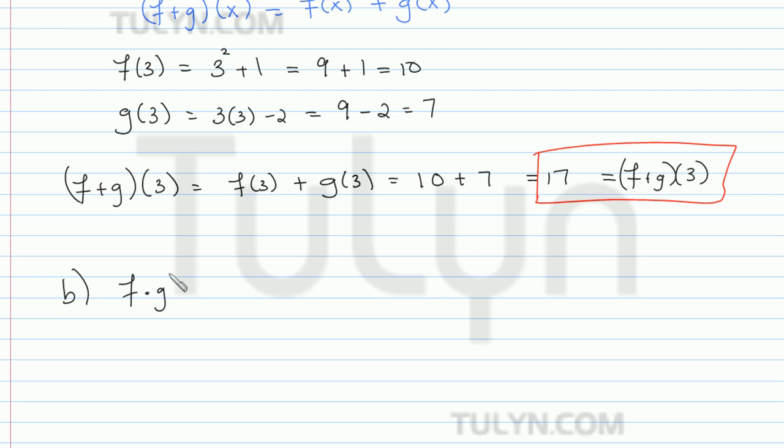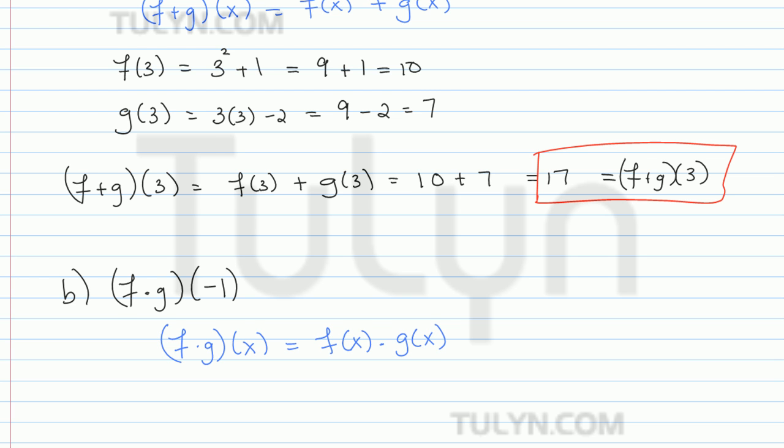So f times g of negative 1. Now recall, for multiplication of functions, f times g of x in general is going to be f of x times g of x. So sort of the same result with addition, in the sense that you can split them up. But in this case, we multiply.